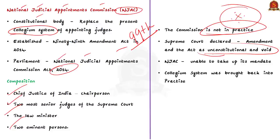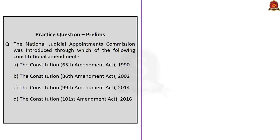So right now we do not have NJAC — we are only following the Collegium System. These are the important points regarding the Collegium System — a very important topic from prelims as well as mains perspective. Remember, this year the Collegium System has been constantly in the news and it is being very active. So it may get the attention of the examiner. Make sure you revise this topic five or six times before the exam. With this, we move to the next topic.